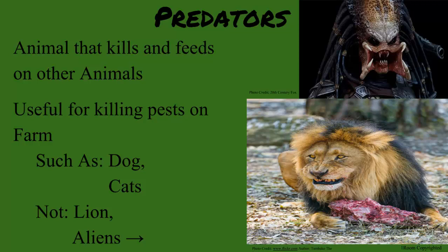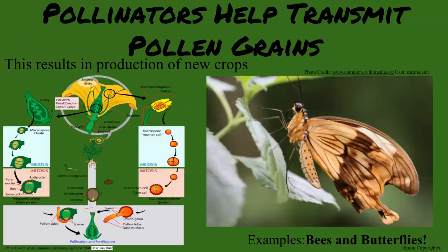Look at that butterfly, Mize. That is useful for our conversation, or else I would smack you for being destructive. Now, butterflies and bees are examples of pollinators. They transmit pollen grains from one flower to the next. Cross-pollination helps in production of new and improved crops.